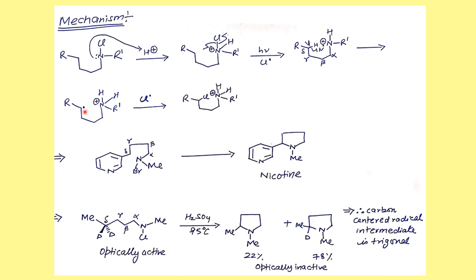The formation of optically inactive compound from optically active compound clearly indicates that the carbon atom on which the radical is present has to be trigonal. It doesn't sense the chirality present on the molecule. This should be hydrogen, not deuterium. There is a typing mistake I made while writing. It should be hydrogen here, not deuterium. Only then this carbon is going to become chiral.